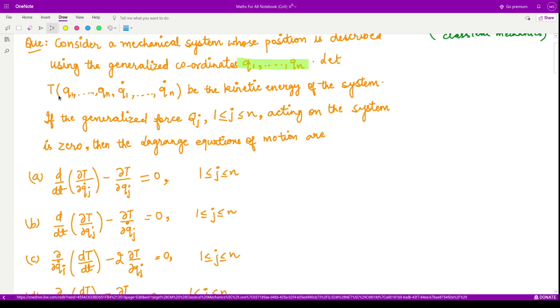Moreover, if T is a function of q1 to qn and q1 dot to qn dot, where these are the generalized coordinates and generalized velocities respectively, T is the kinetic energy of the system.